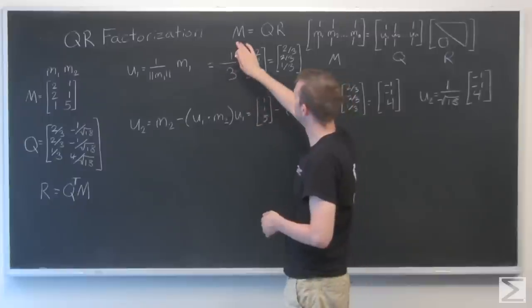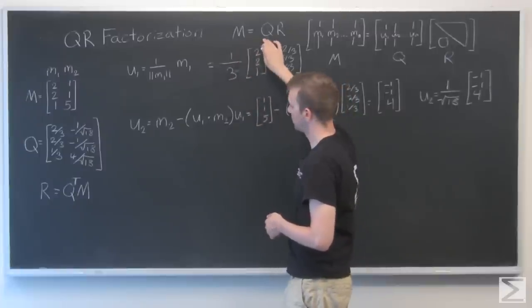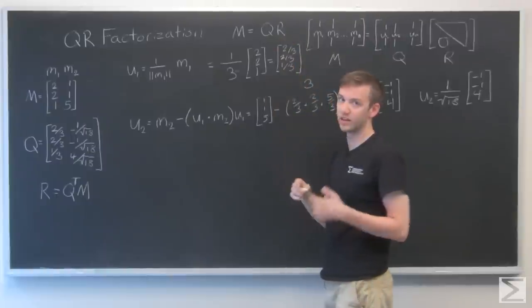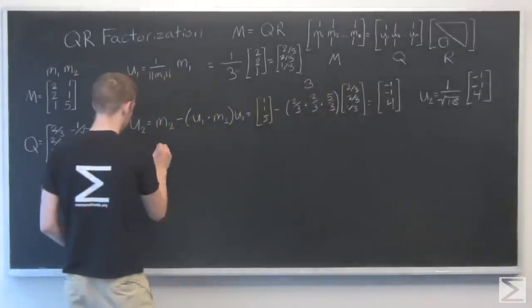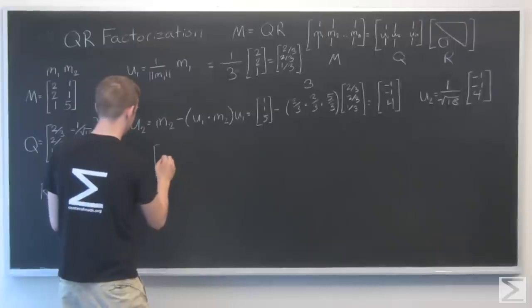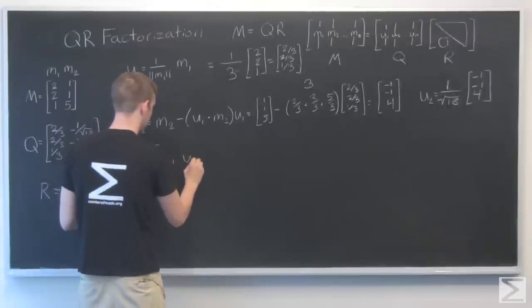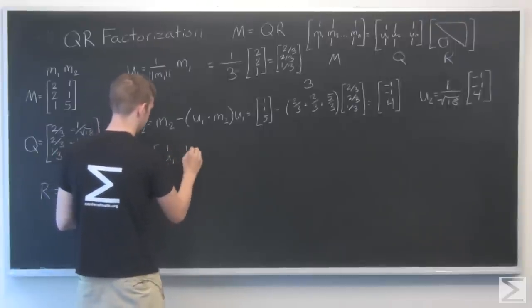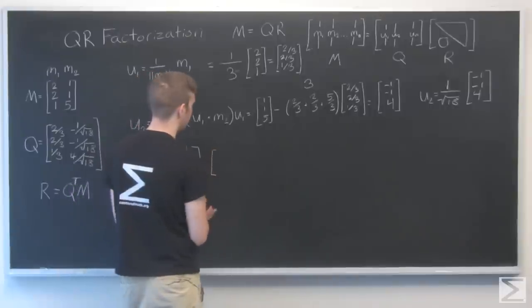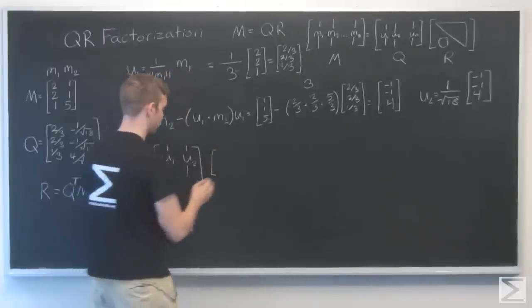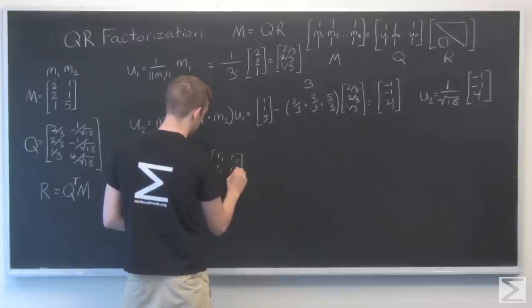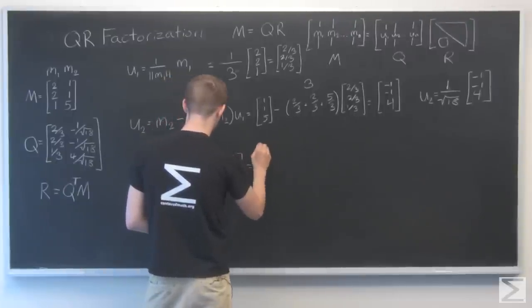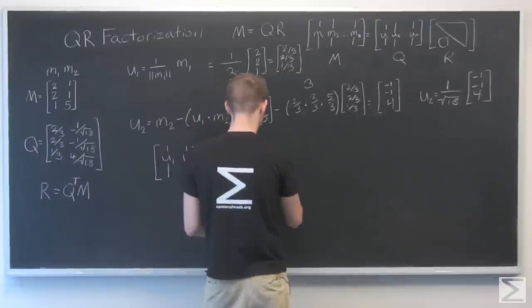M is a 3 by 2 matrix. Q is a 3 by 2 matrix. So we know that R has to be a 2 by 2 matrix in order for us to get M. So we had Q, which was u1, u2, times some 2 by 2 matrix R. And I'm going to say r1, r2, r3, and r4 equals m1 and m2.